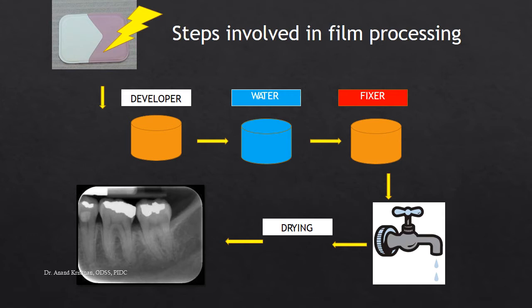In our institution, we generally use the visual method because most of the time we develop only one radiograph at a time. To summarize: the steps for film processing — developer, water, fixer, rinse, and dry — are common to both methods. The only difference is that the time and temperature method uses controlled timings, while the visual method involves visualizing every step along the way.